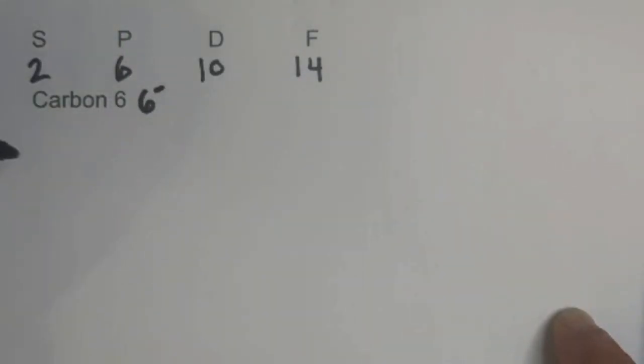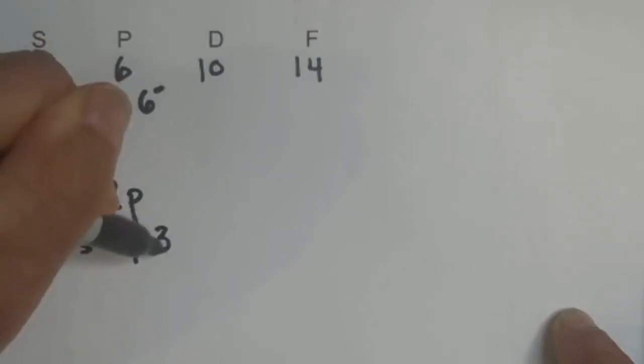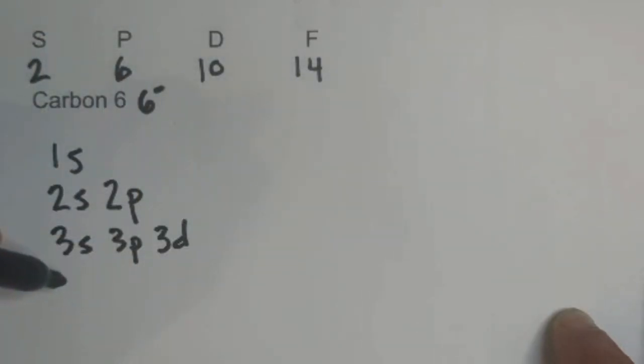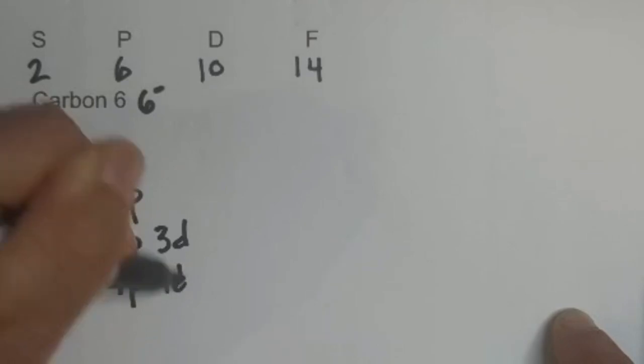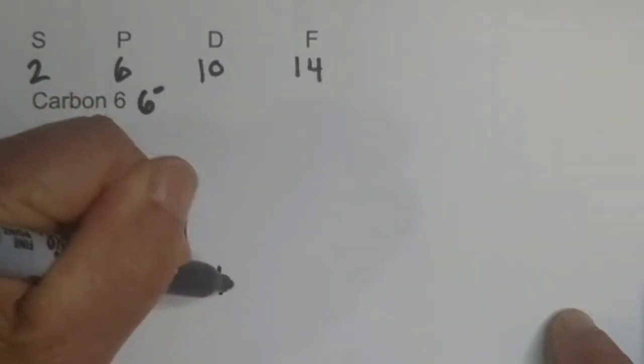First you can draw this chart: 1s, and then we have the next level 2s, 2p, then we go 3s, 3p, 3d, and then we can go for if you need it: 4s, 4p, 4d, and then 4f.